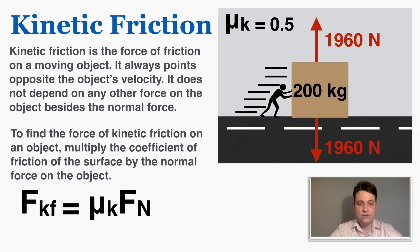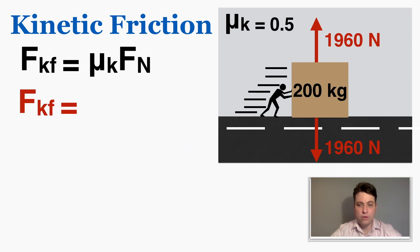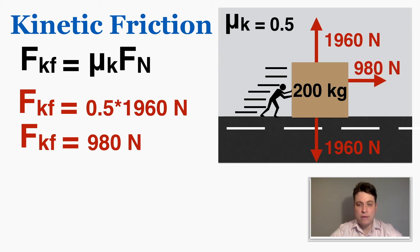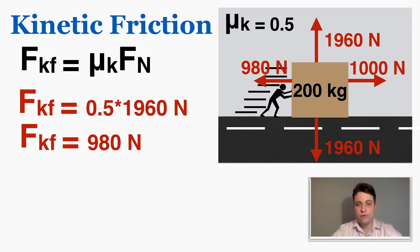The second type is kinetic friction — the force on a moving object. It always points opposite the object's velocity and does not depend on any other force besides the normal force. The equation is: force of kinetic friction equals the coefficient of kinetic friction times the normal force. For this box, with a coefficient of kinetic friction of 0.5 and a normal force of 1,960 newtons, the kinetic friction is 0.5 times 1,960, which equals 980 newtons. Unlike static friction, kinetic friction doesn't adjust — it's always that same fixed value.